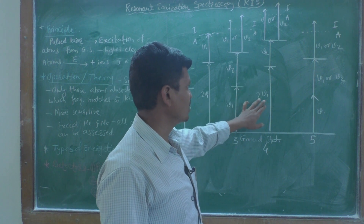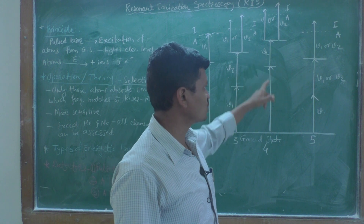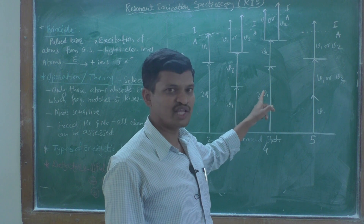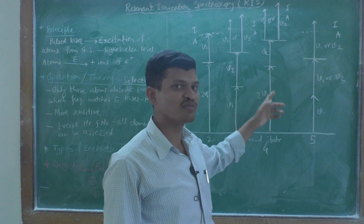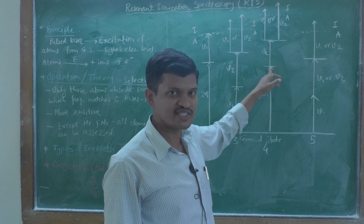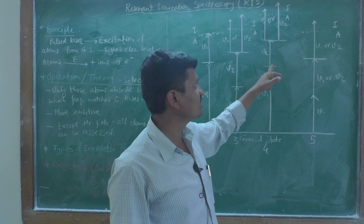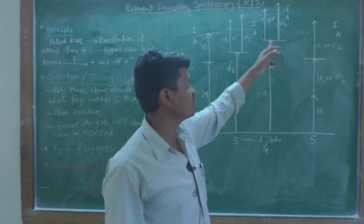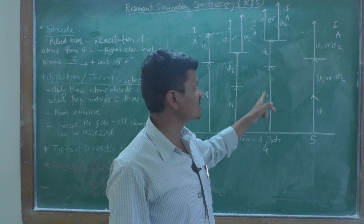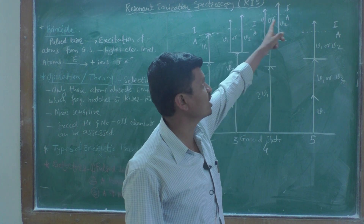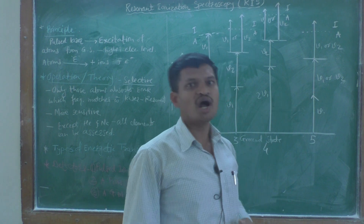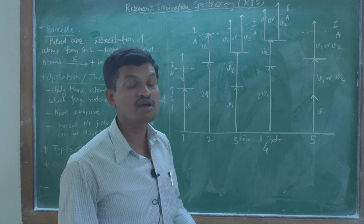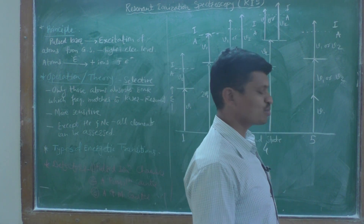In Scheme 4, two lasers are used where the first laser has doubled frequency — written as 2ν₁. With this doubled-frequency first laser, ground state atoms are excited, then further promoted to a higher electronic energy level. From there, ionization takes place using either the first laser (ν₁) or second laser (ν₂), represented by the dashed line.